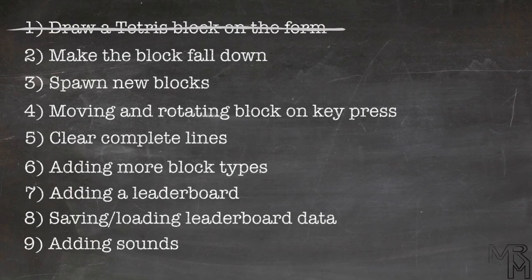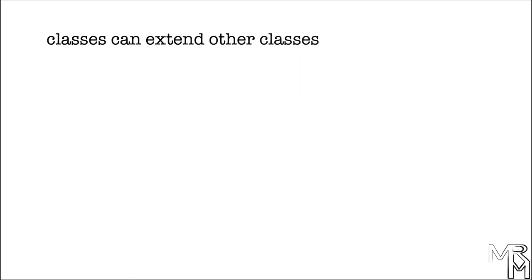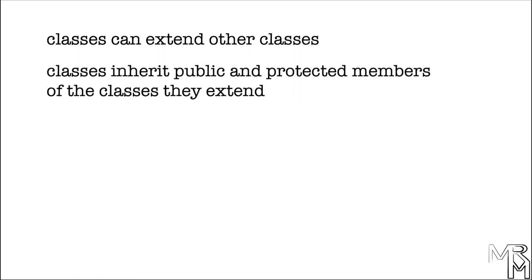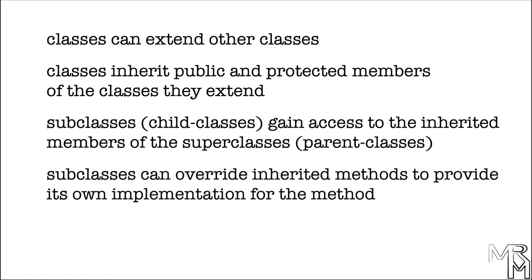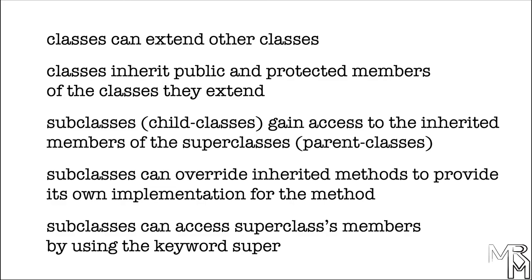Let's summarize what we learned in this video. We learned that classes can extend other classes, and by doing so they inherit public and protected members of those classes. Subclasses, also known as child classes, gain access to the members they inherit from superclasses, also known as parent classes. Subclasses can override inherited methods — by overriding a method, the subclass provides its own implementation. In case a subclass overrides a method, it can still access the superclass's version using the keyword super. We also practiced using the drawRect and fillRect methods of the Graphics class to draw on a JPanel, and we learned that we can use an array of arrays to represent a grid — in our program, we use an array of int arrays to represent a Tetris block.